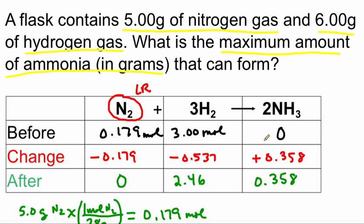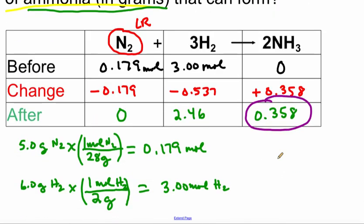Now, go back to the problem. Notice the problem asks us to find the amount of ammonia in grams. So our final step is going to be to take this amount of ammonia, which is in moles, and then convert it into grams. So let me show you what that would look like.